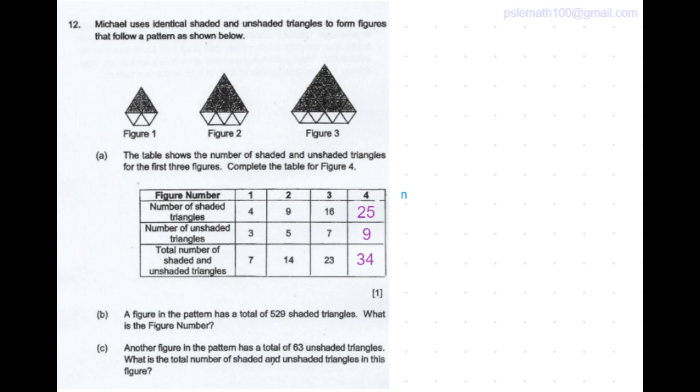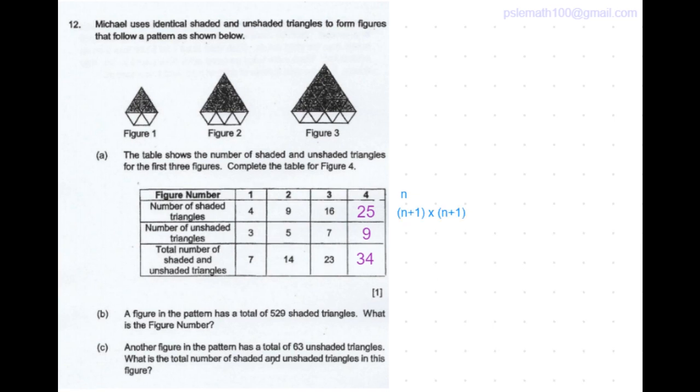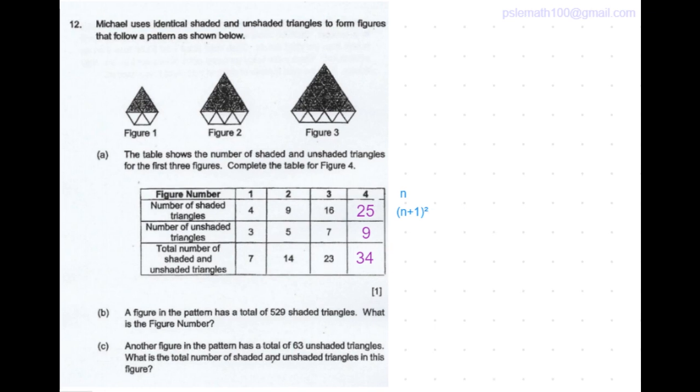For figure 4 the number of shaded triangles is 5 times 5. So for figure n the number of shaded triangles would be n plus 1 times n plus 1 which is nothing but n plus 1 square.